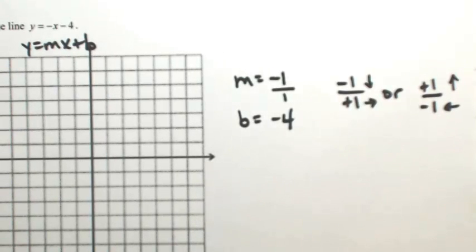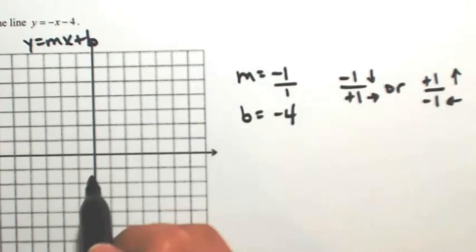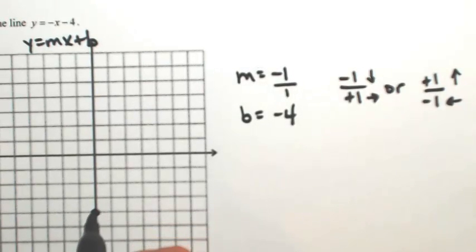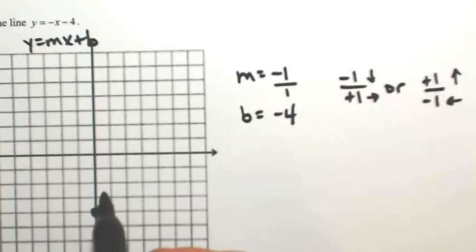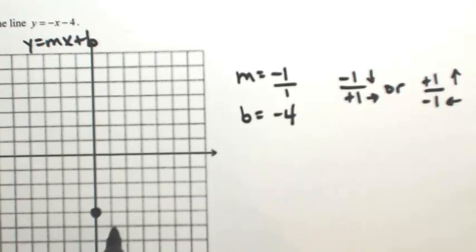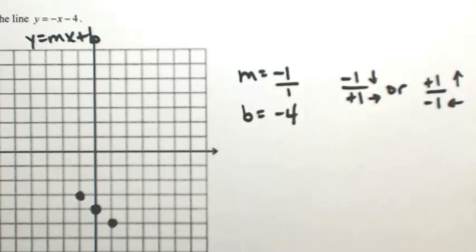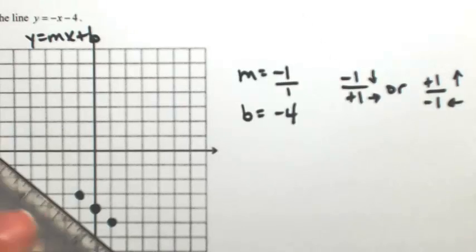We're going to go those directions from the y-intercept, which we found to be negative four. So from that point, I'm going to go down one, right one, or maybe I went the other way, up one, left one. Either way you go, you still get the same line.